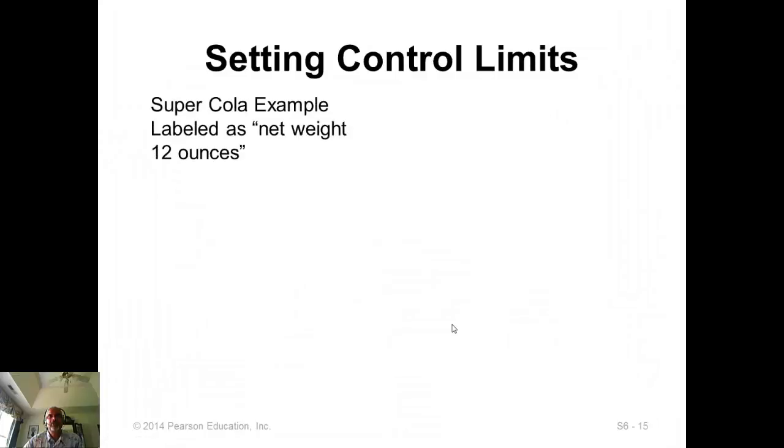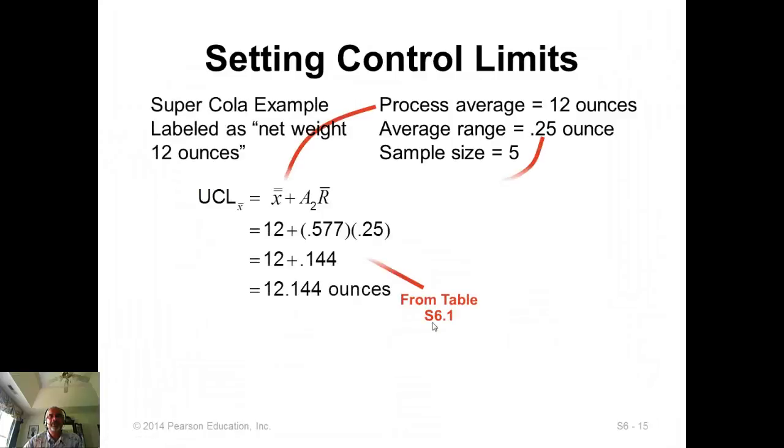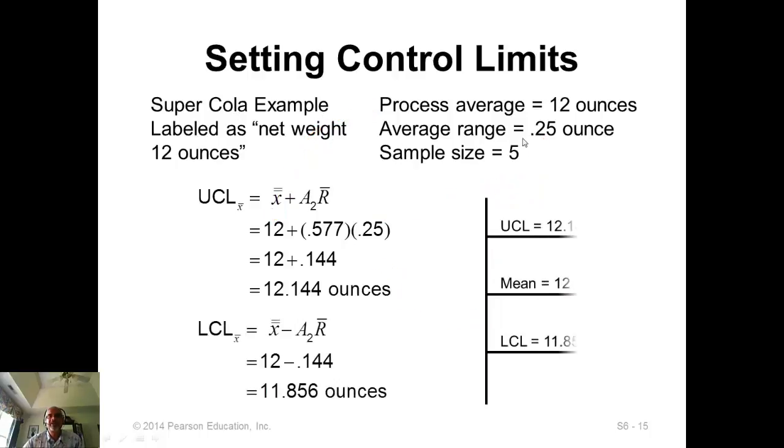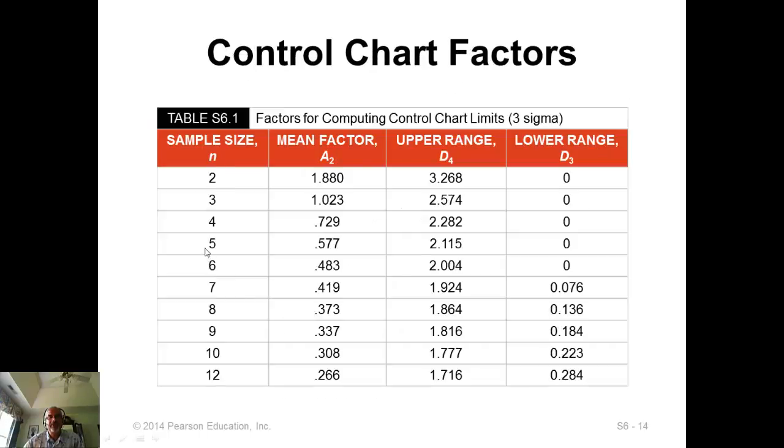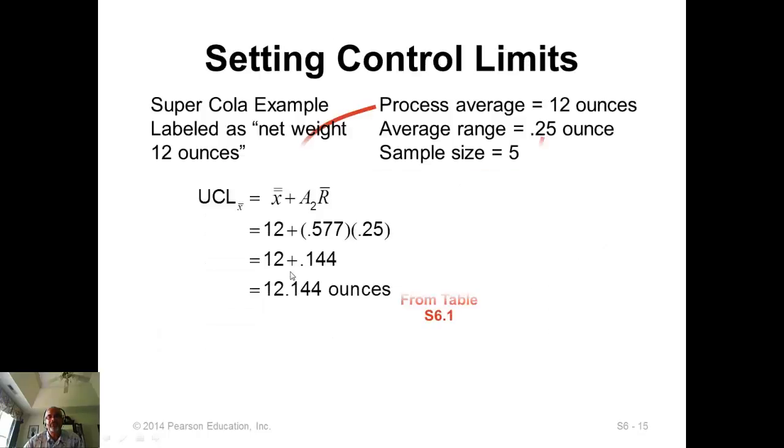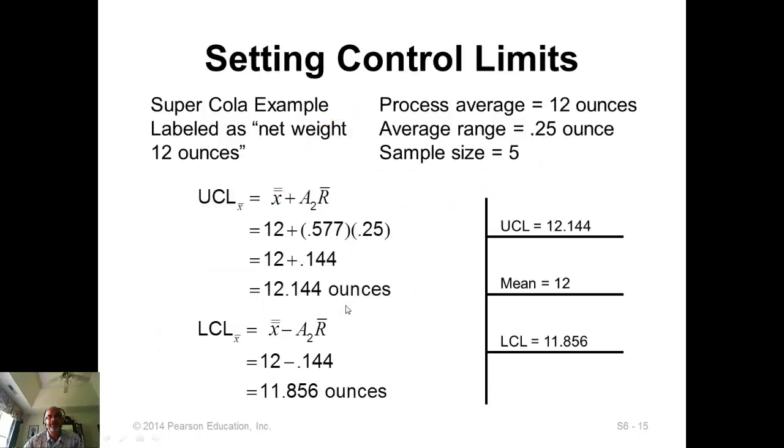So let's look at the computation. Here we have Super-Cola, and we have X double bar is 12, average range is 25, and sample size is 5. So it's a different problem. Then you plug it in. For sample size of 5, if you go back to the previous table, A sub 2 is 0.577. So we put that, and you have the lower limit and the upper limit.